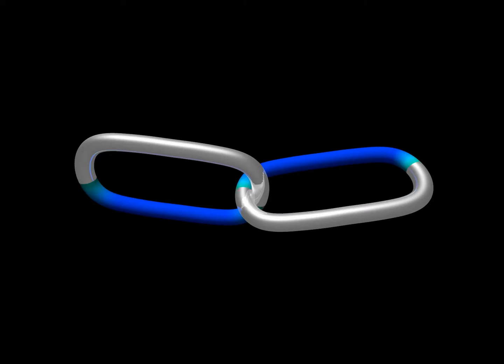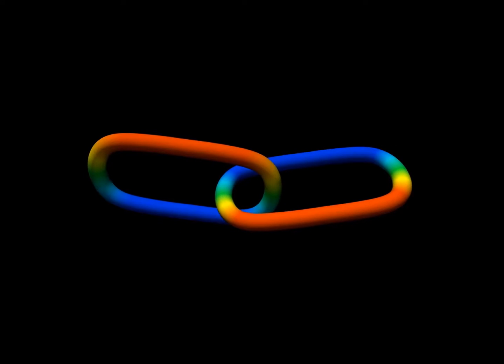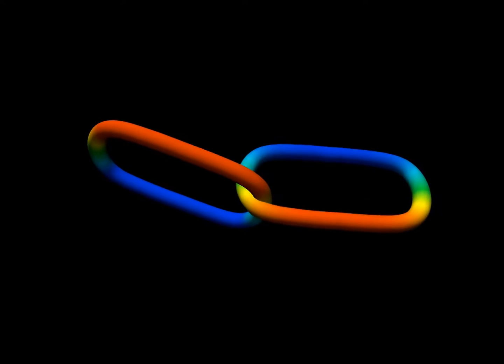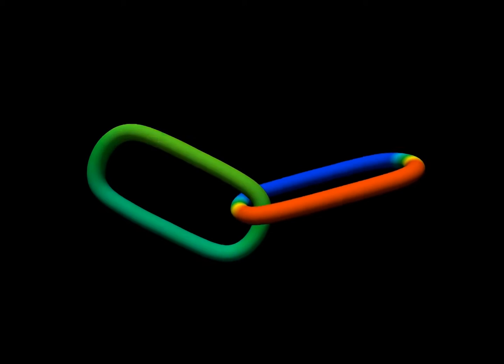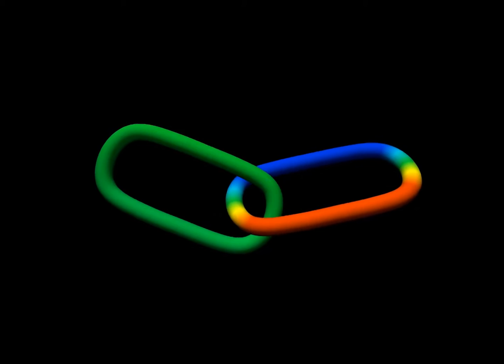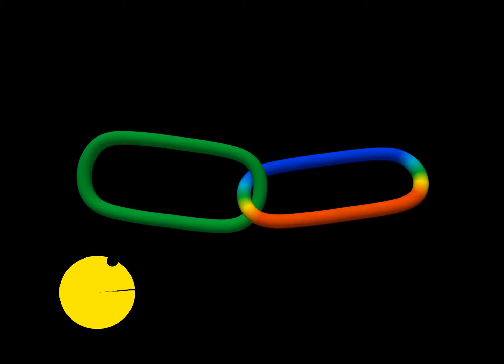We can color the rings as in a curved projection. Thanks to the coloring, even two-dimensional beings can understand that the rings are linked.